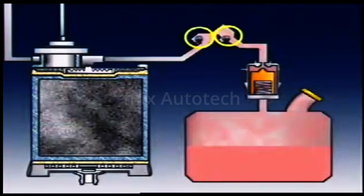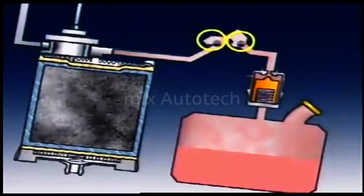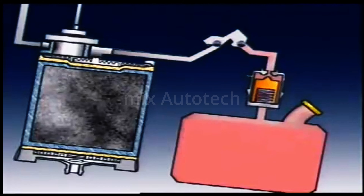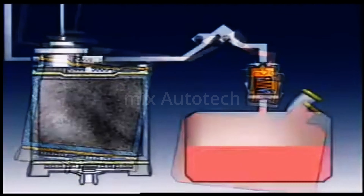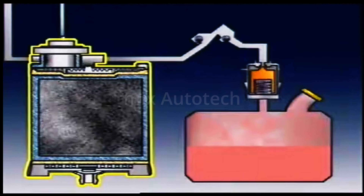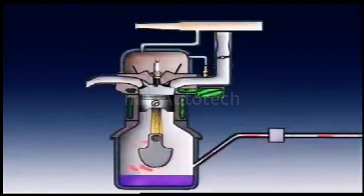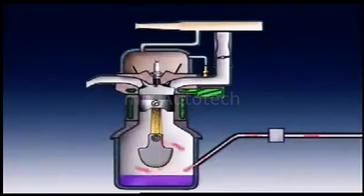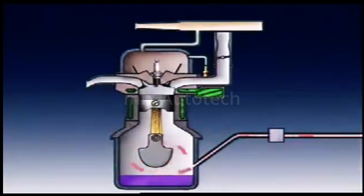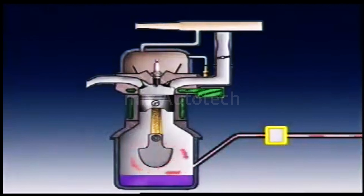This vapor line can incorporate check valves. If the vehicle is tilted too far from the horizontal, they stop liquid fuel entering the storage volume. A storage device is used to store the fuel vapors, and the fuel tank breathes through this storage device. Some vehicles use the engine crankcase. When the temperature of the fuel in the tank increases, fuel vapors are forced along the vent line past the liquid check valve and into the crankcase.